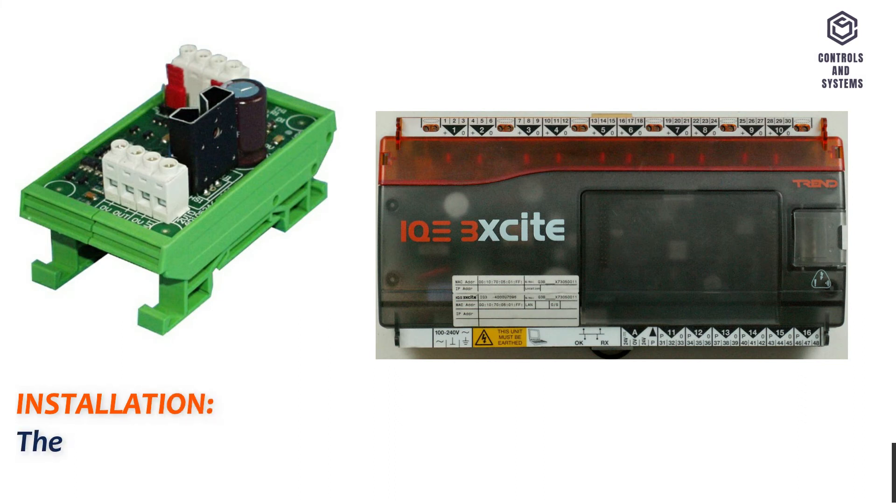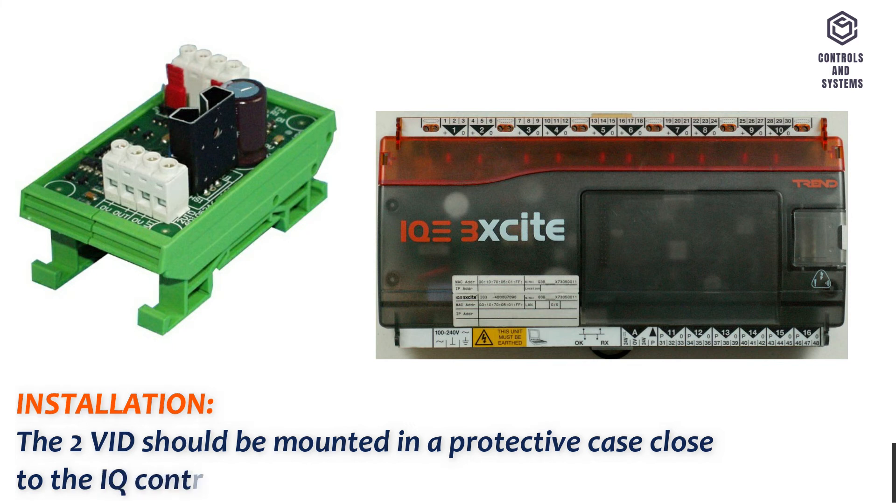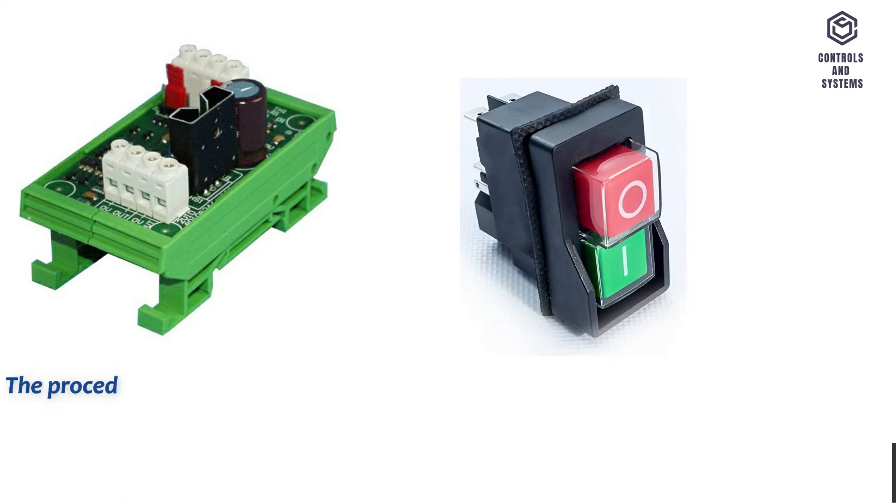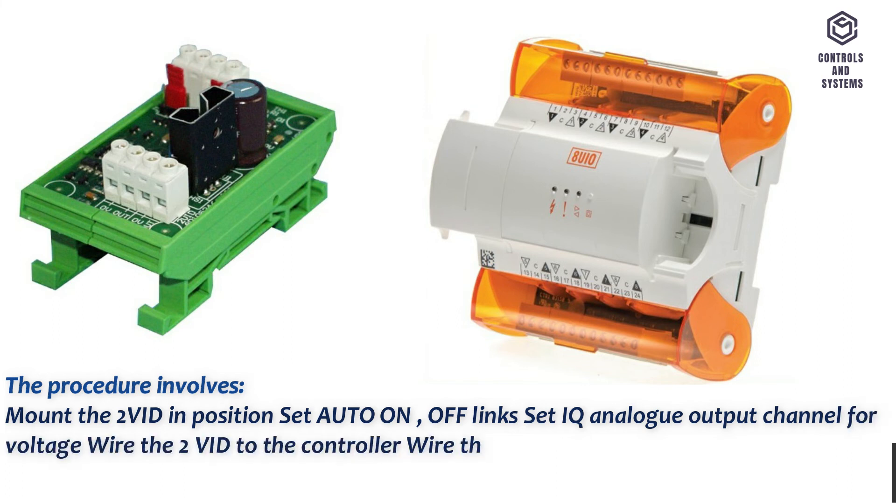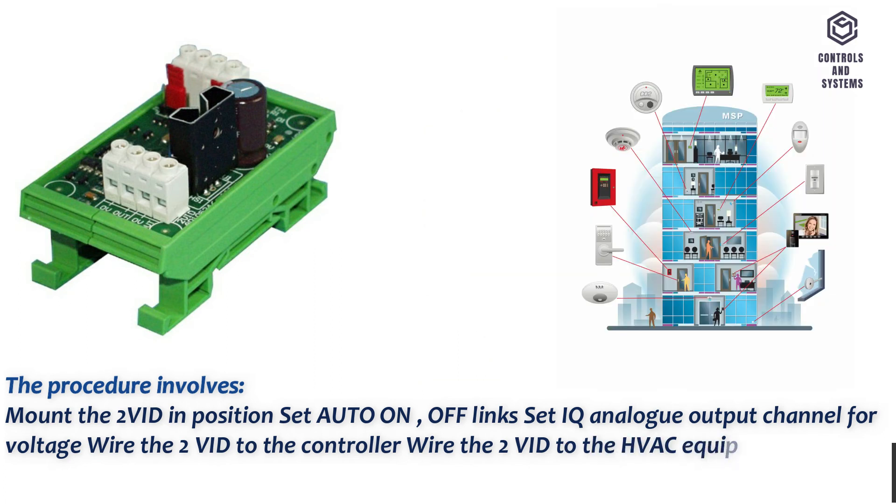Installation: The 2VID should be mounted in a protective case close to the IQ controller. The procedure involves: Mount the 2VID in position, set auto on/off link, set IQ analog output channel for voltage, wire the 2VID to the controller, wire the 2VID to the HVAC equipment, connect the 24V supply, check interface operation.